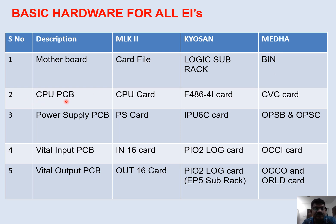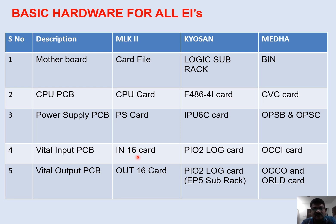The CPU PCB: in Microlog 2 it is called the CPU card, in Kyosun the same is called F4864i, and in MEDA it is called the CVC card. For the power supply PCB: in Microlog 2 it is called the PS card, in Kyosun it is IPU-6C card, and in MEDA it is OPSB and OPSC. For vital input cards: in Microlog 2 it is the IN-16 card where 16 inputs can be given to each card, in Kyosun it is the PI-O2 log card, while in MEDA it is called the OCCI card.